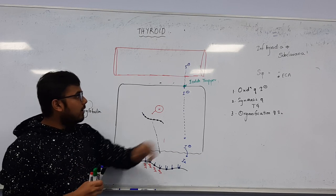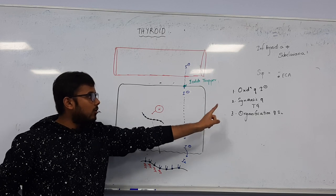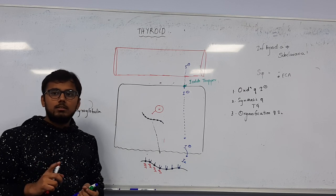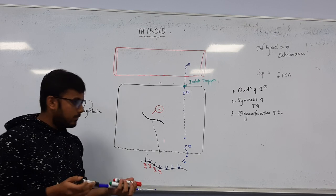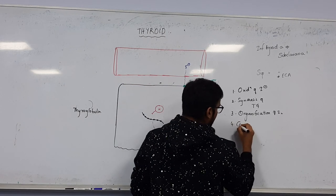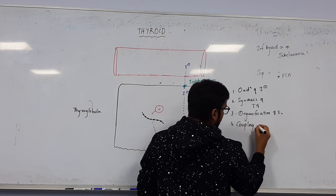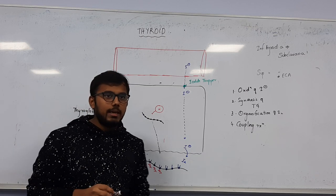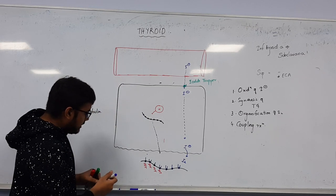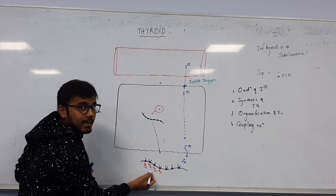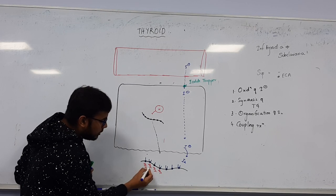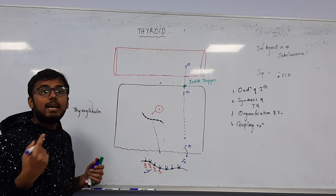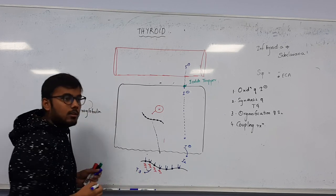The fourth step is the coupling reaction. In the coupling reaction, mono-iodotyrosine and di-iodotyrosine join together, and the result is tri-iodothyronine - that is T3. MIT plus DIT gives T3.